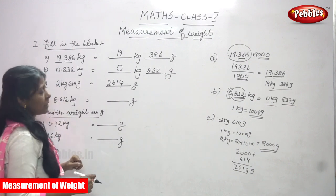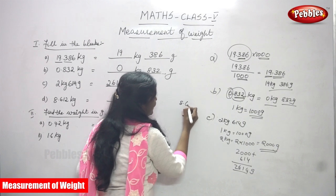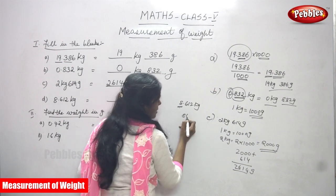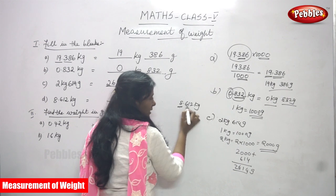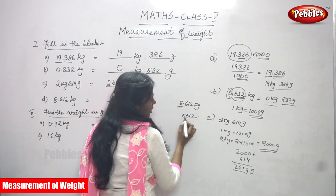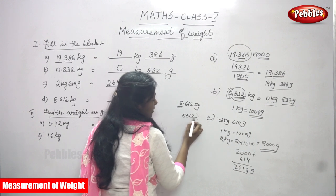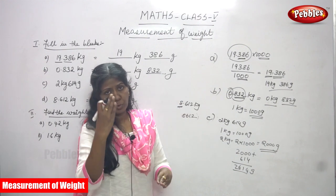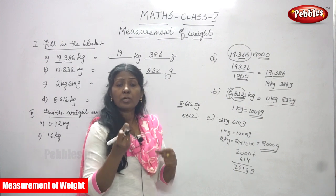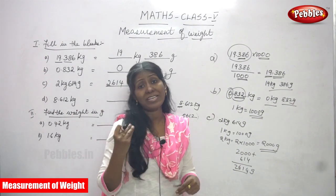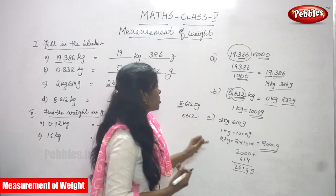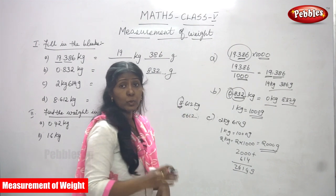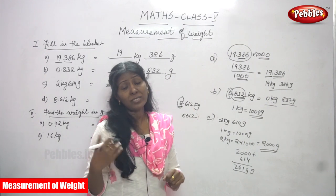Next: 8.612 kilogram — convert into gram. To convert, multiply by 1000, which gives 8612. Then divide by 1000 by moving the decimal three places to the left, bringing you back to 8.612. The whole number 8 is kilogram and the decimal part 612 is gram.